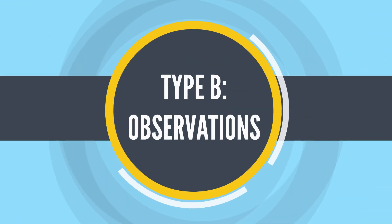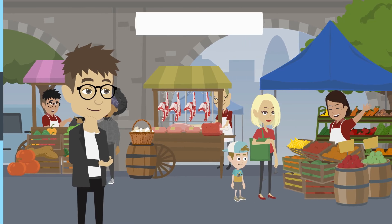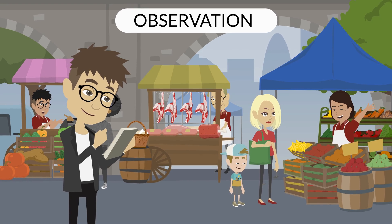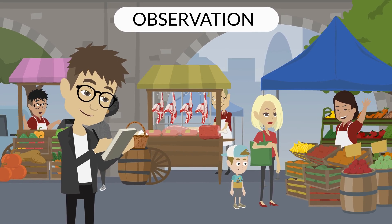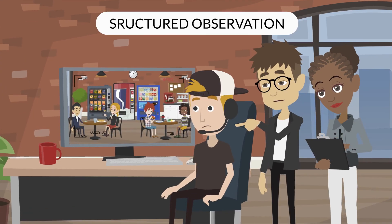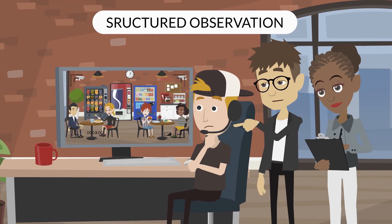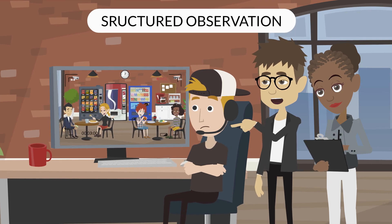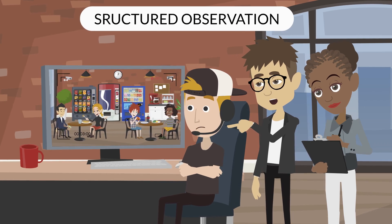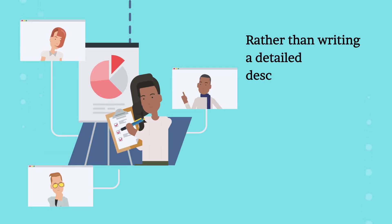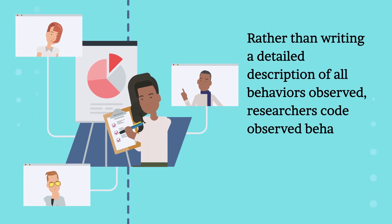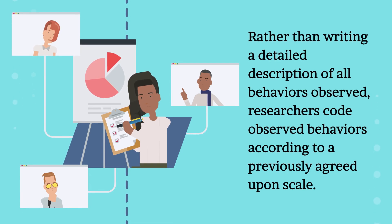Type B: Observations. Observation — watching what people do — is a type of correlational, non-experimental method where researchers observe ongoing behavior. Structured observation is research conducted at a specific place and time where participants are observed using a standardized procedure; rather than writing detailed descriptions, researchers code observed behaviors according to a previously agreed-upon scale.